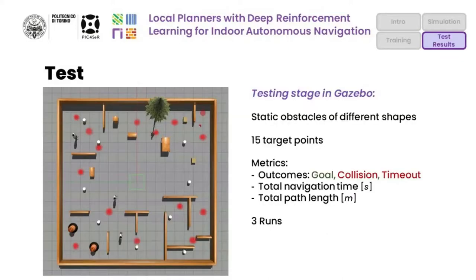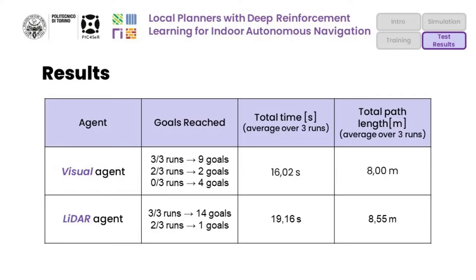We finally test the two agents in a different virtual environment for the testing phase, in a point-to-point navigation task. We place 15 challenging target goals near obstacles, and evaluate the two agents using basic navigation metrics such as total path length and time, averaging results over three rounds of tests. The visual agent reaches 4 goals out of 15, while the LiDAR agent is able to reach all target points. However, the visual agent presents reduced average time and path length.